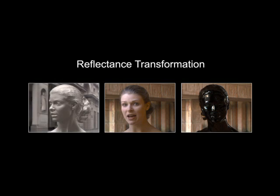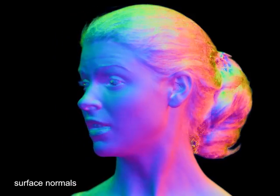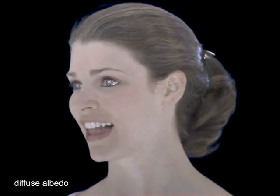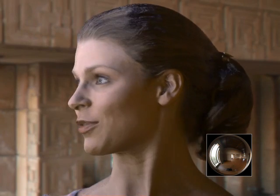We can process the reflectance functions of the performance to produce either subtle or stylized changes to the actor's reflectance. From the lighting directions, we can estimate surface normals using photometric stereo, seen here as colored normal maps. The process also estimates the diffuse albedo of the performance, and an ambient occlusion map can be derived by analyzing the shadowing in the reflectance functions. Here we see the original performance composited into an environment using the basis lighting conditions. Using the albedo, normals, and ambient occlusion, we can render a diffuse version of the performance into a lighting environment.